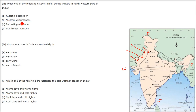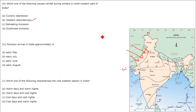Paschimi Vikshobh — western disturbances. This is brought by the jet stream from the Mediterranean Sea, and this causes the western disturbances, giving us rainfall during winters.